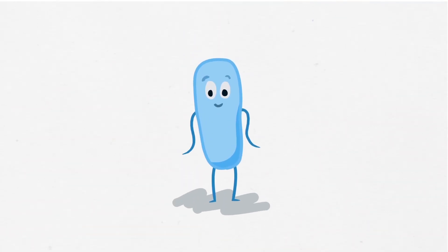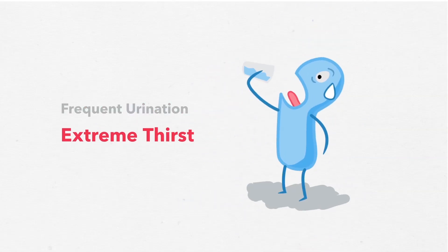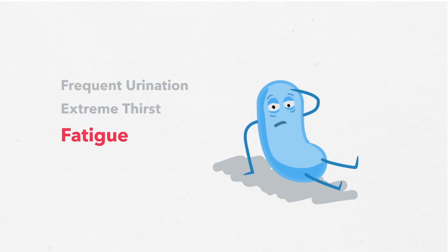This is why people who have type 1 diabetes and don't know it yet will have to pee a lot and will be very thirsty. They're usually tired and may lose weight.